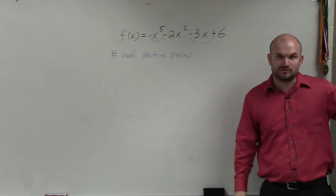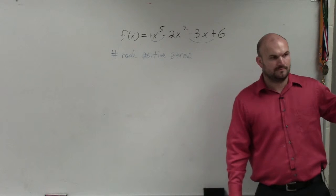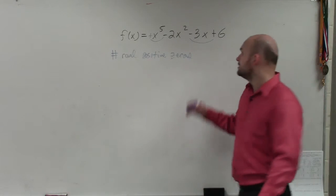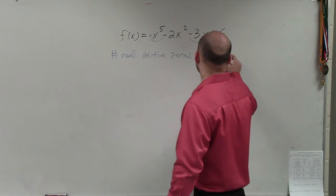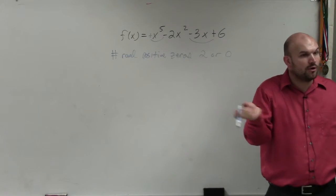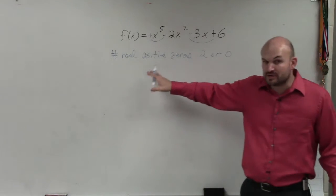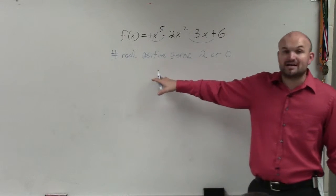Well, if the number of sign changes is 2, can I subtract an even number from 2? I can subtract 2 from 2. So it could be 2 or 0. That means I either have two positive real zeros or zero positive real zeros. Now, remember, they're positive real. So they could be irrational or rational.